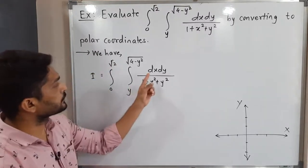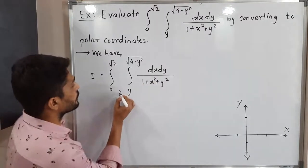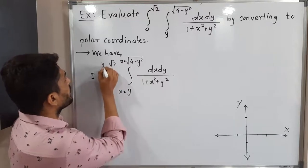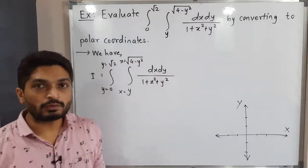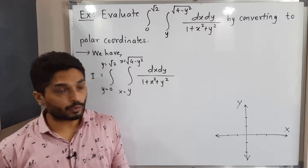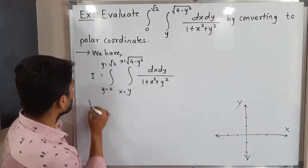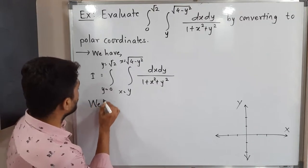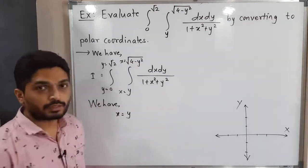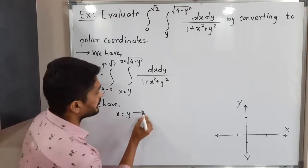The inner integration is with respect to x and the outer integration is with respect to y. So the limits of x are given here. We will consider all these curves one by one and draw their diagrams in the x-y plane. The first curve is x is equal to y — since the power of x is 1 and the power of y is also 1, it represents a straight line.